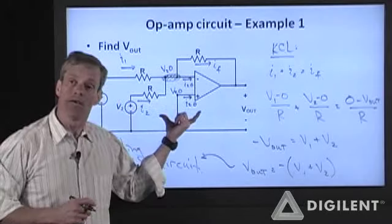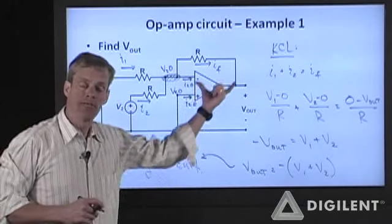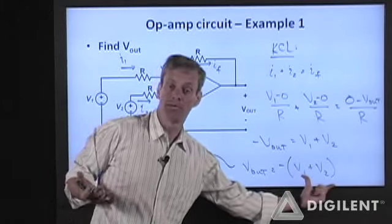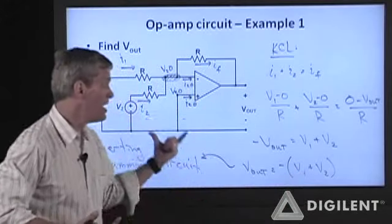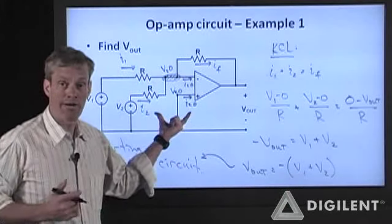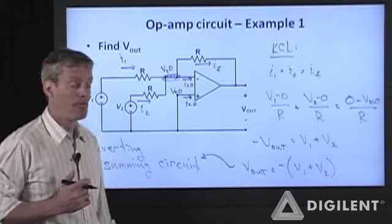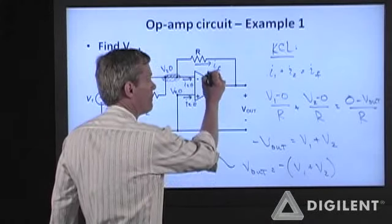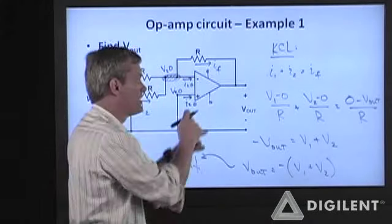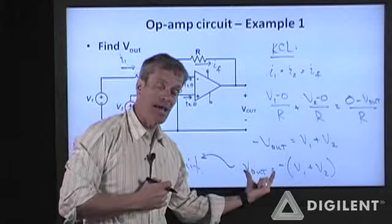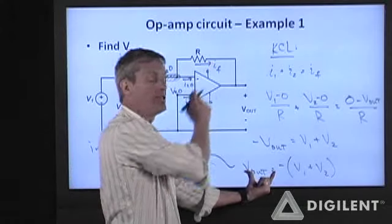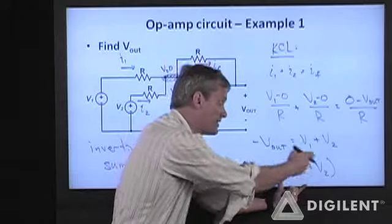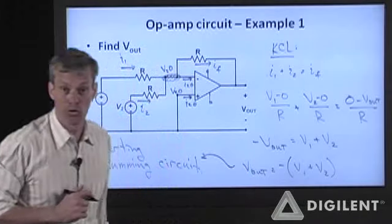We again see the ability of the operational amplifier-based circuit to do math. If I want to add up a couple of signals, I can grab this circuit, wire it up, and it'll do it. Keep in mind that there are supply rails — the output cannot exceed that voltage range. If it does, you'll saturate and this expression will no longer hold true.